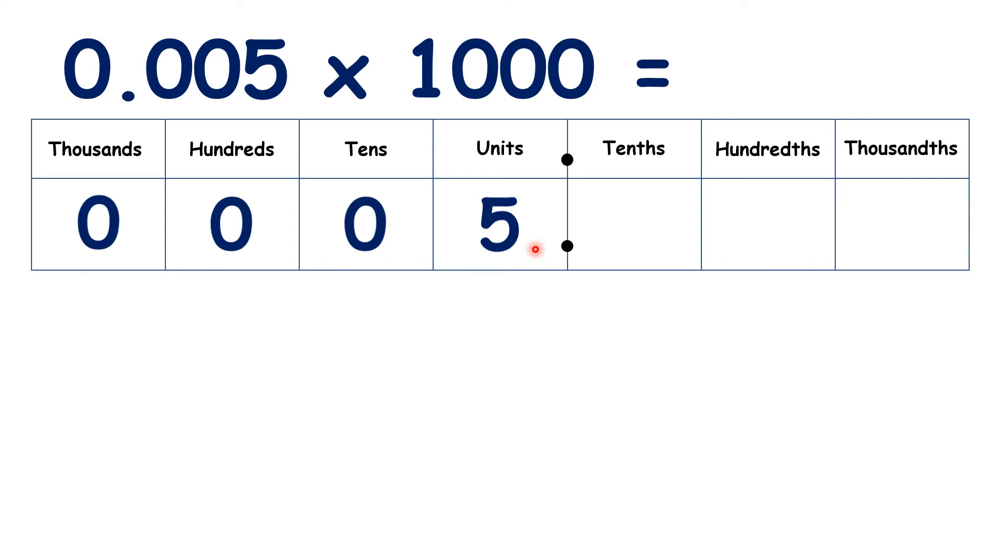But we know that we can ignore 0s at the start of a number if they're not in the units or in the decimal place value columns. So our answer is just 5. We don't have anything in our decimal place values, so we know that our answer must be a whole number.